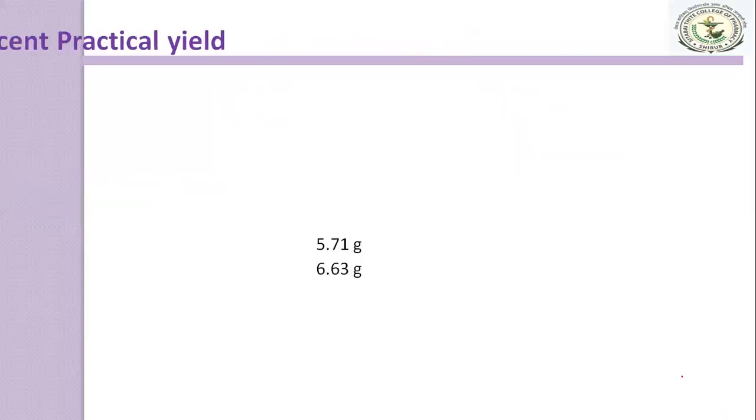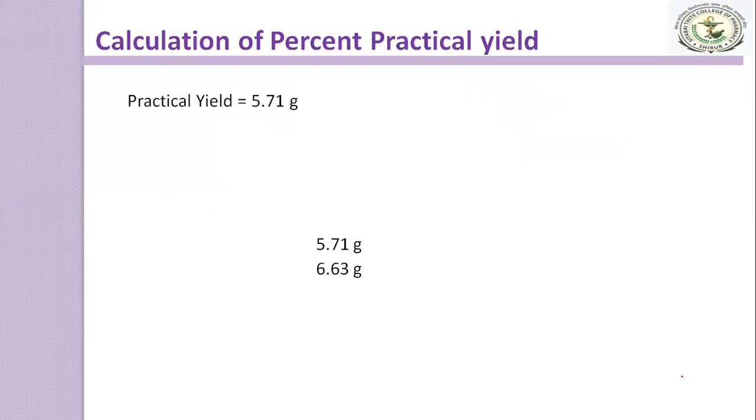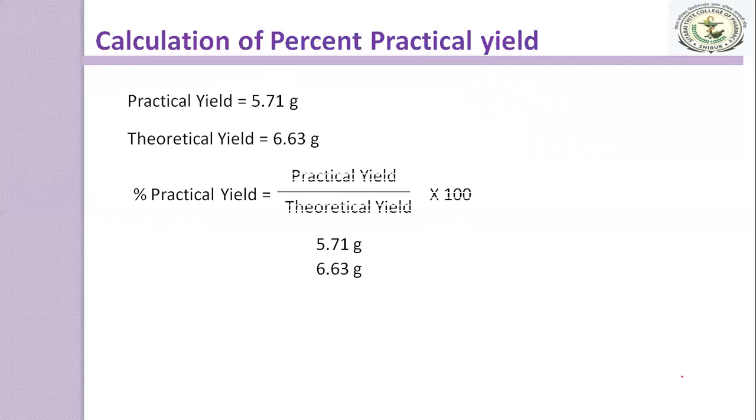After that, you have to calculate the percent practical yield. So, you have to take the weight of the 2-methylbenzimidazole which is your practical yield. Suppose which is 5.71 grams and theoretical yield is 6.63 grams. So, depending upon that, you have to calculate the percent practical yield by using the formula practical yield divided by theoretical yield times 100. So you have to just put up the values and you will get the figure which is the percent practical yield. Here is 86.12%.